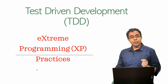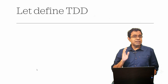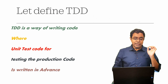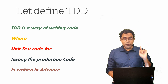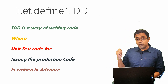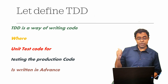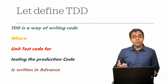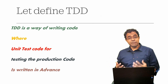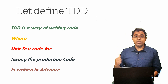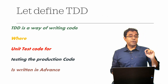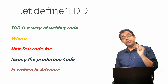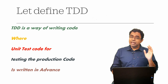Let's first define TDD. TDD is a way of writing code where unit test code for testing the production code is written in advance. We all know that developers write unit tests for testing code — what TDD is all about is that unit test code for testing the production code is written before writing the production code.